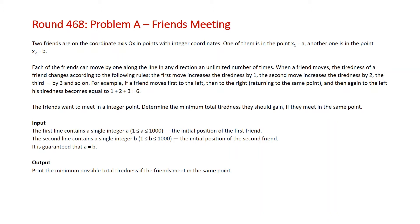The friends want to meet in an integer point. Determine the minimum total tiredness they should gain if they meet in the same point, and note that the value of the starting position A and B for the two individuals will be between 1 and 1000, and we know that A will not be equal to B.